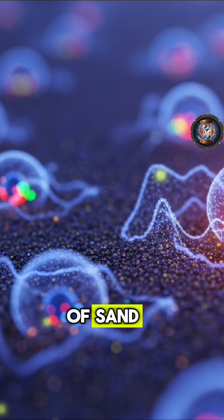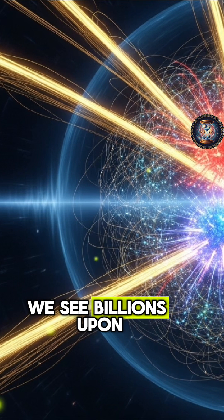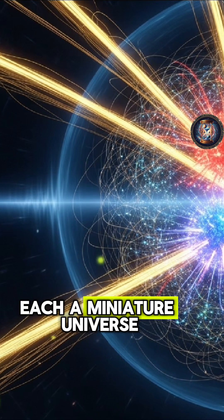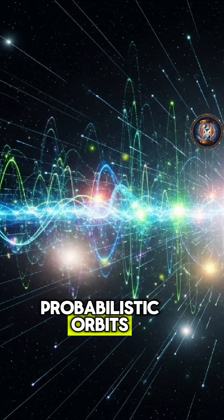Looking at a grain of sand, we don't just see silicon dioxide. We see billions upon billions of atoms, each a miniature universe with electrons moving in probabilistic orbits.